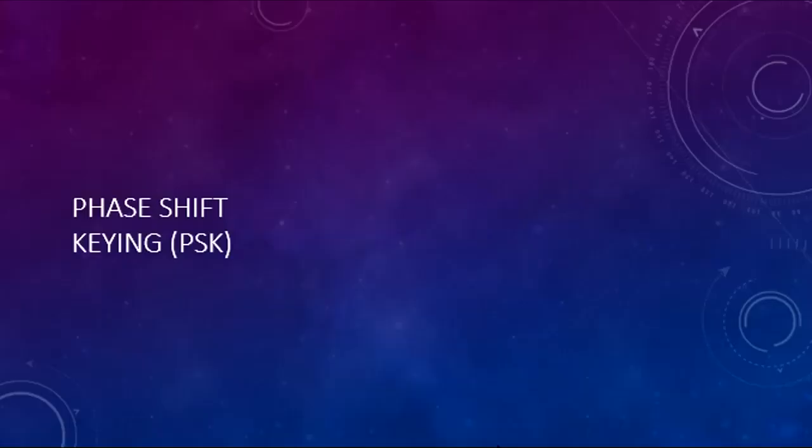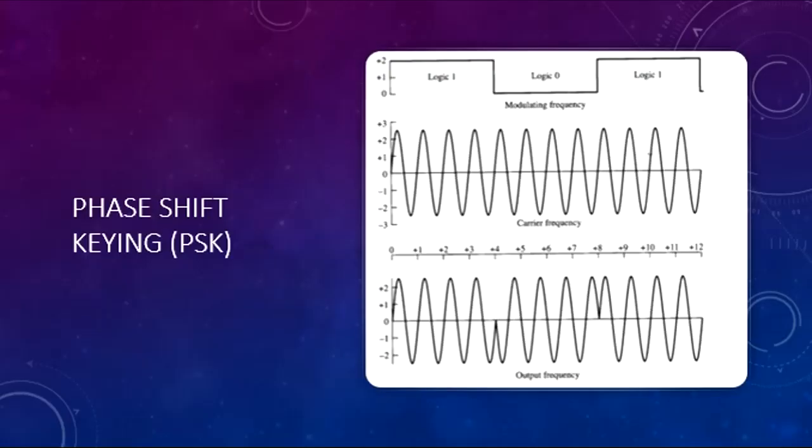All right, first we will be talking about PSK, phase shift keying. It is a digital process which conveys data by changing or modulating the phase of a constant frequency or reference signal. It's also called a carrier wave. The modulation is accomplished by varying the sine and cosine inputs at a precise time. So, as we can see here, after four periods of the carrier wave, it is going to be modified in such a way that it makes either a sine or a cosine wave.